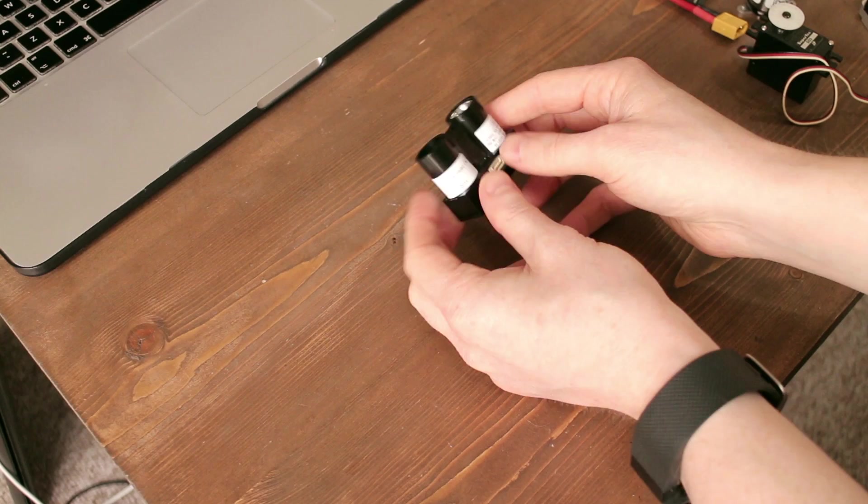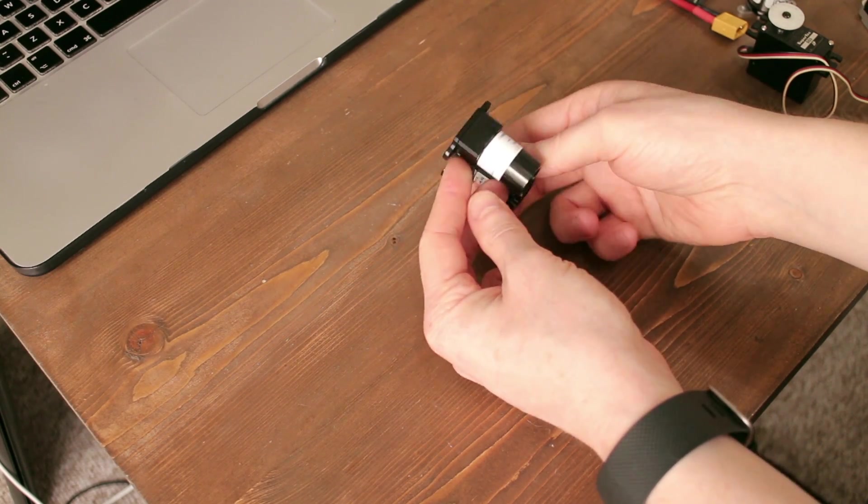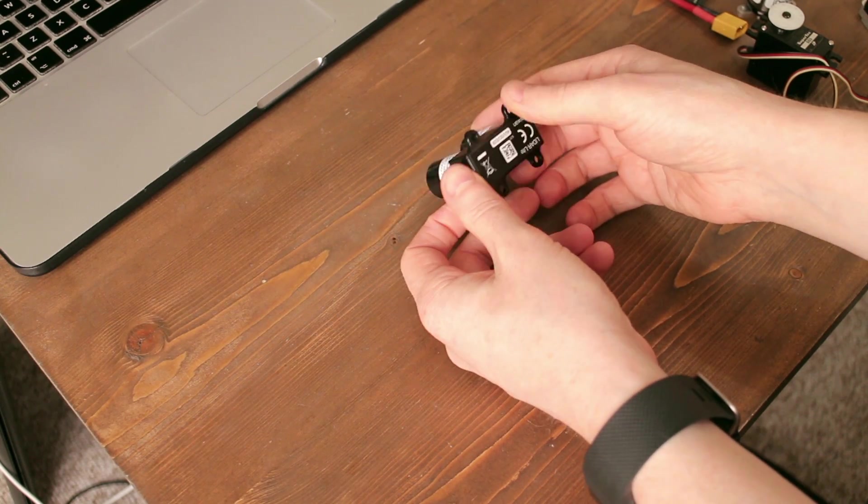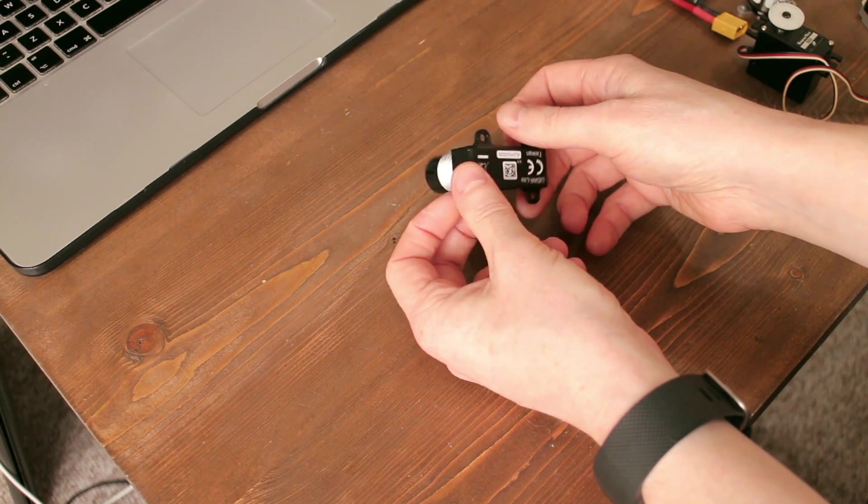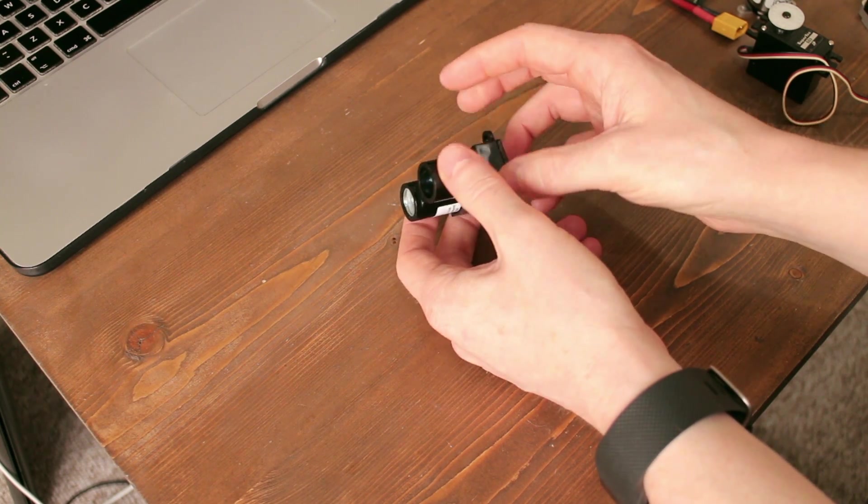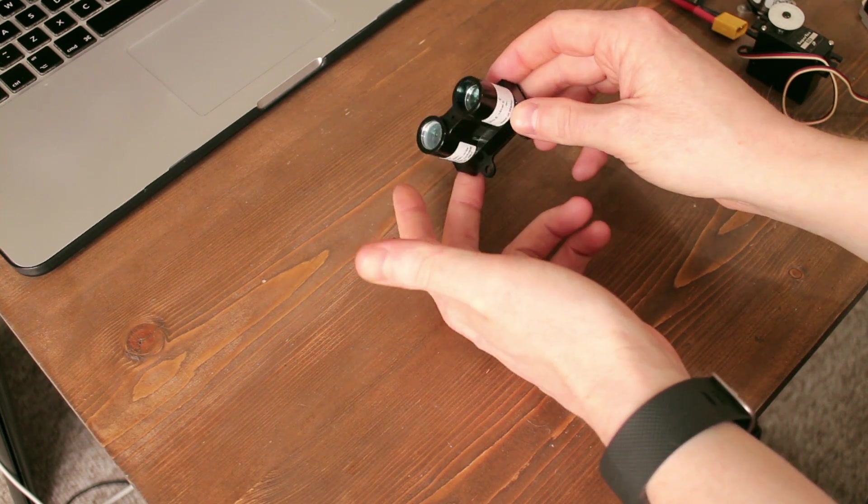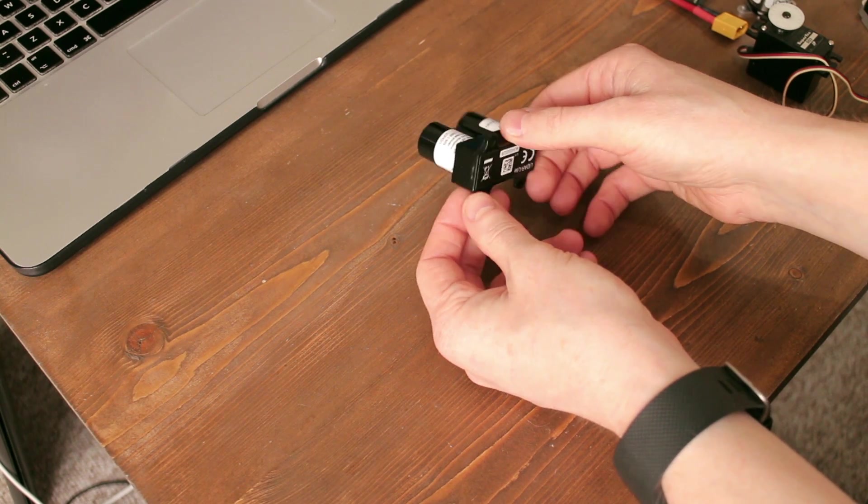The sensor I opted for is the Garmin LiDAR Lite version 3. This was released towards the end of last year and it's got a range of 0 to 40 meters, and it's pretty accurate across the entirety of that range unlike a lot of other types of sensors.